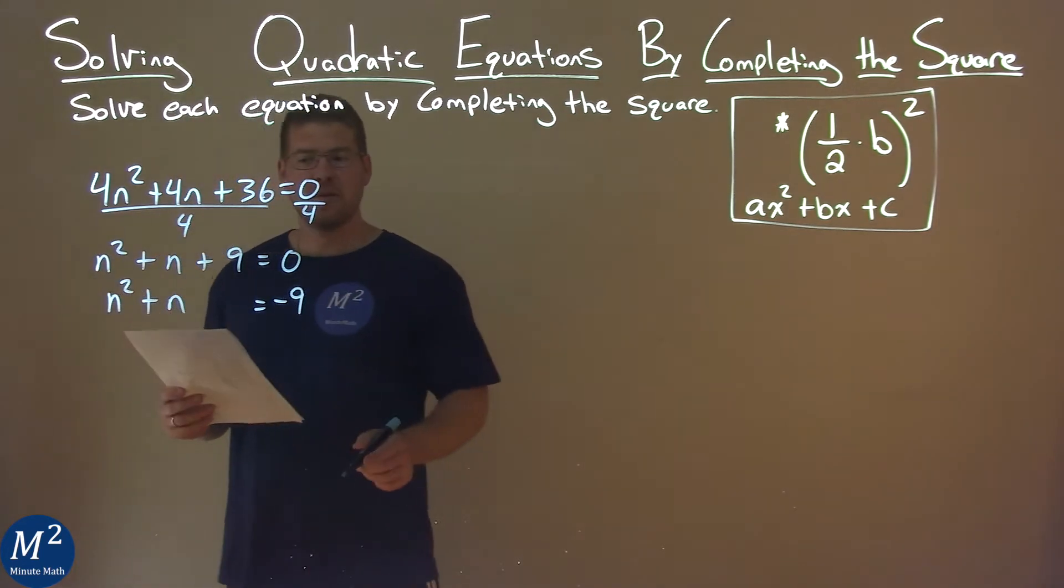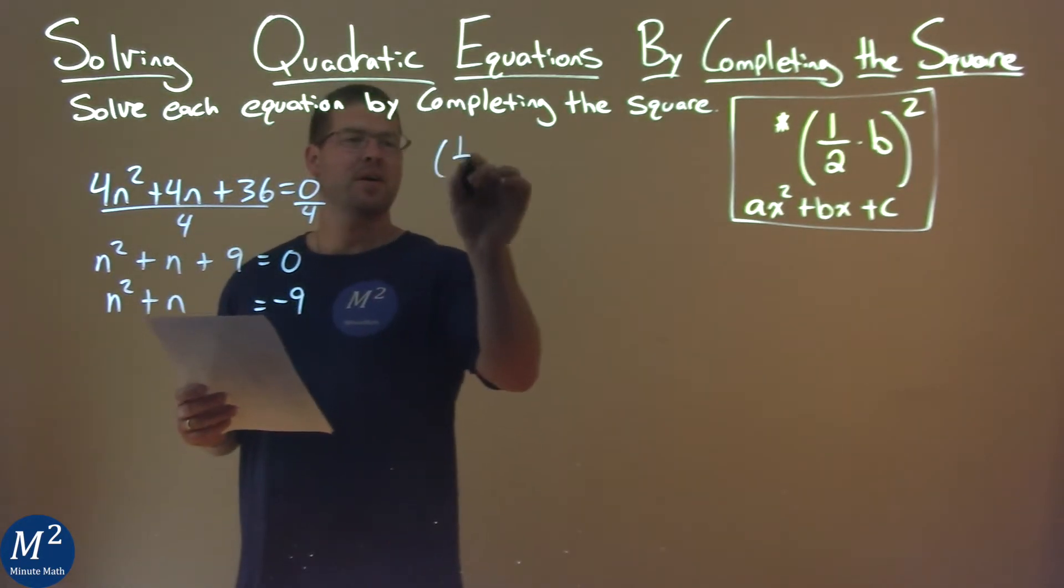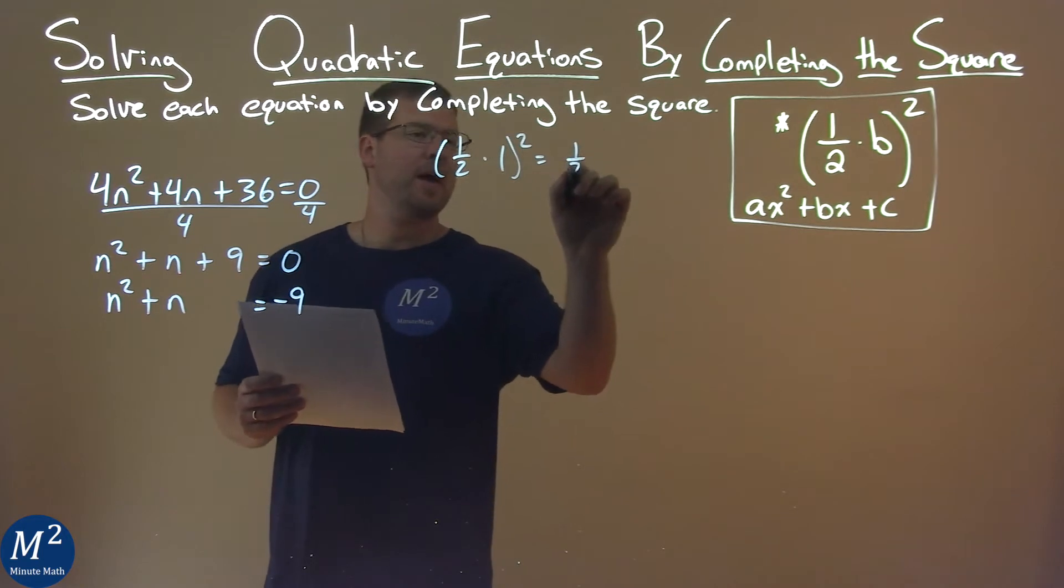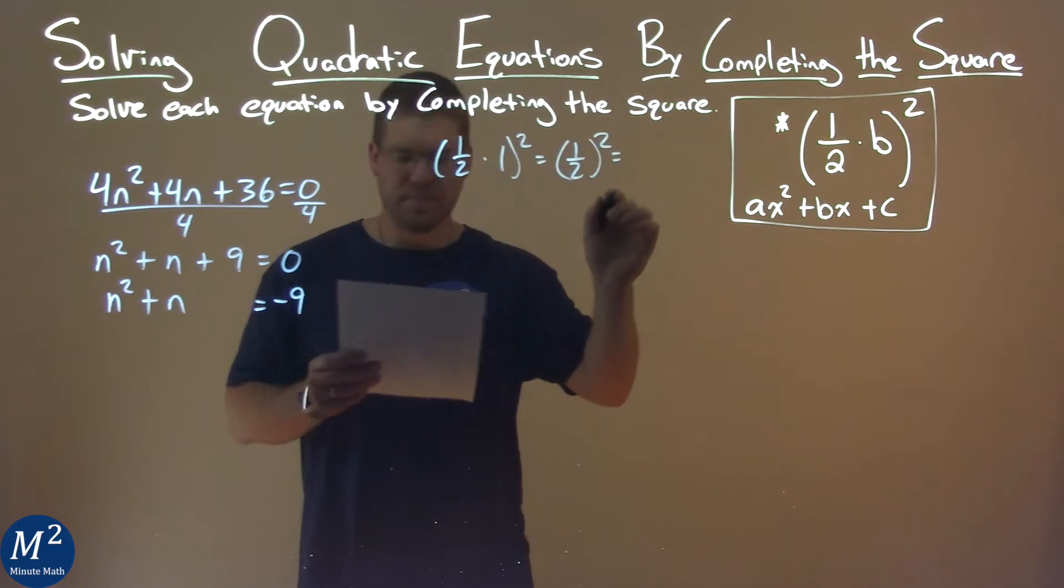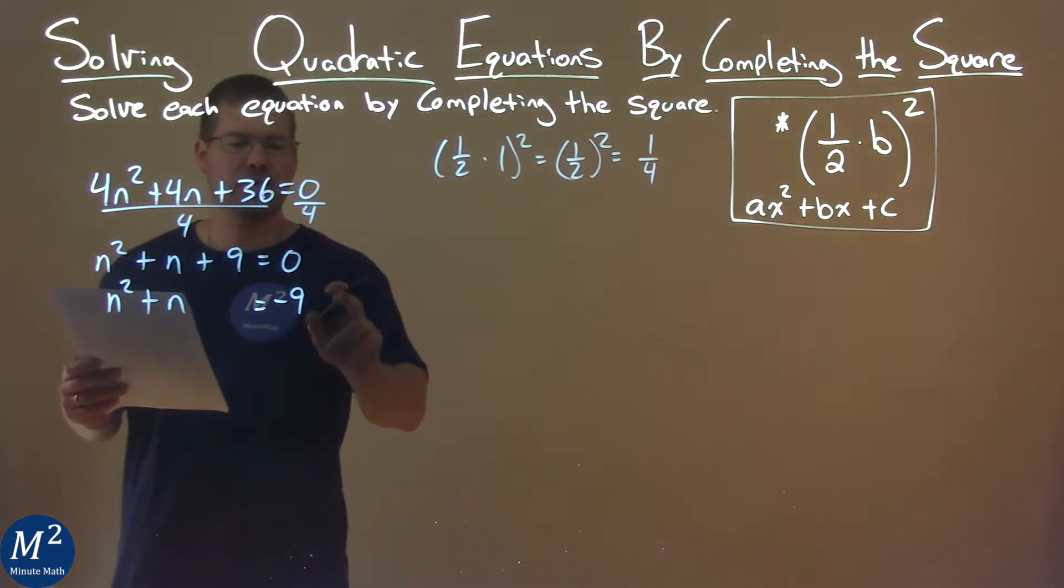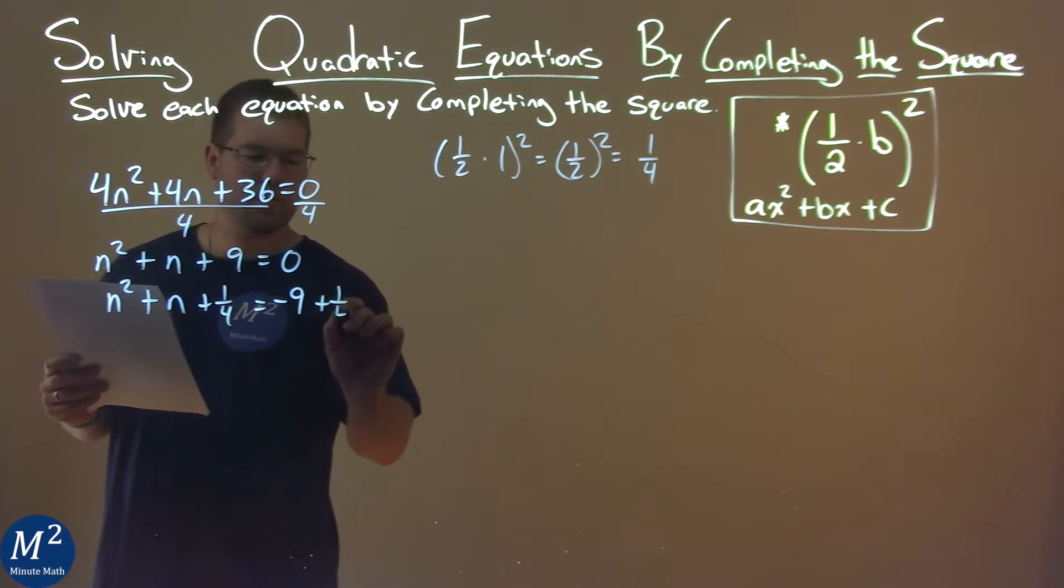My b value, that's right in front of this n, is 1. So I use my formula: one half times 1 squared. One half times 1 is one half. Square that and we get one fourth. So now I'm going to add one fourth to both sides of the equation, plus one fourth, plus one fourth.